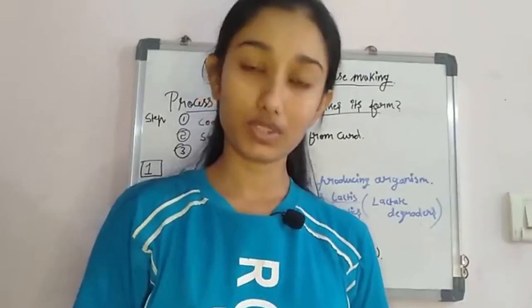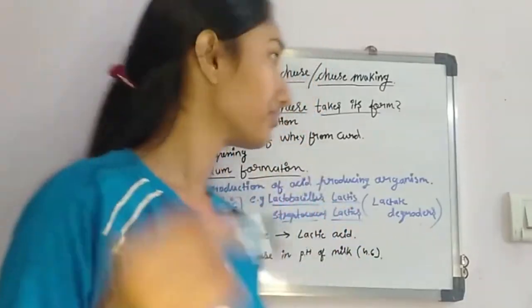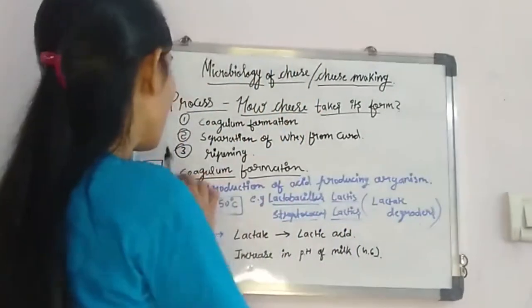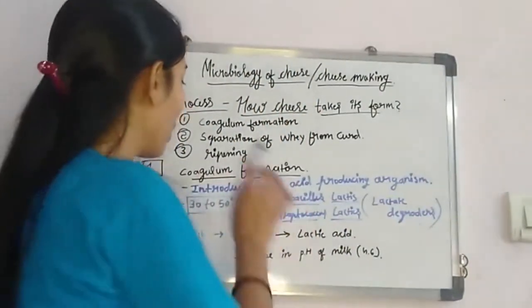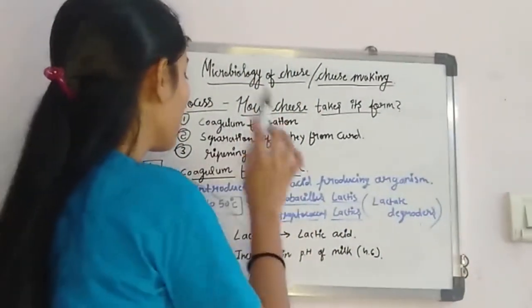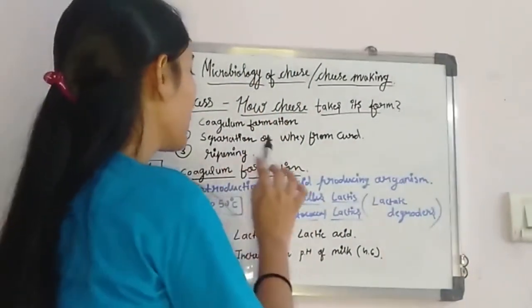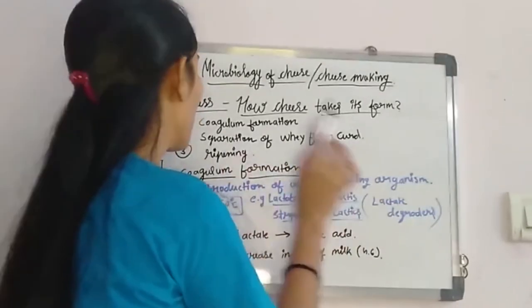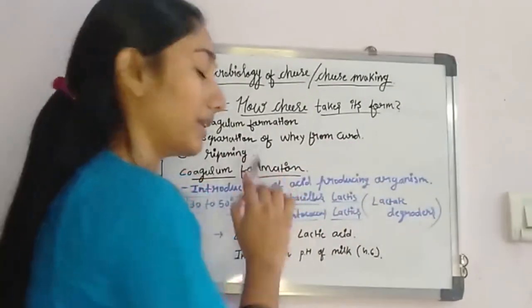That's why rennet enzyme is also used in cheese making procedures. There are three steps: coagulum formation, separation of whey from curd, and ripening.